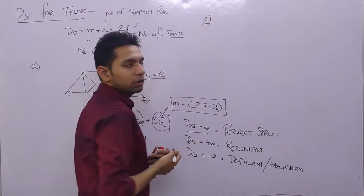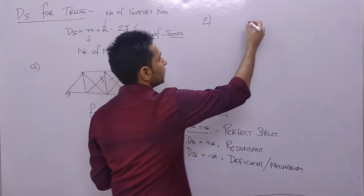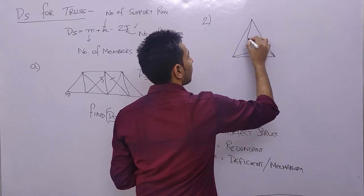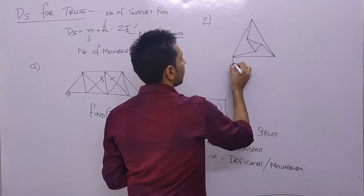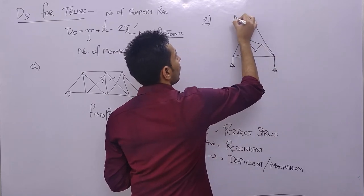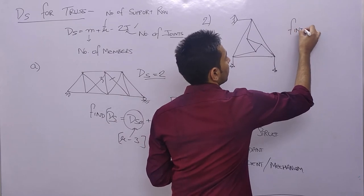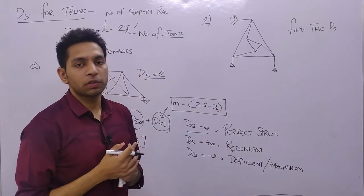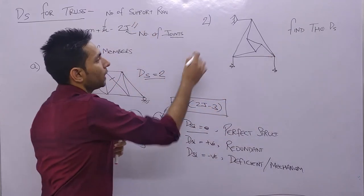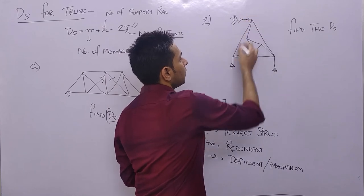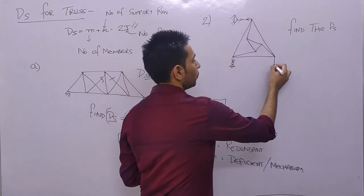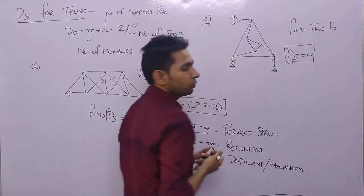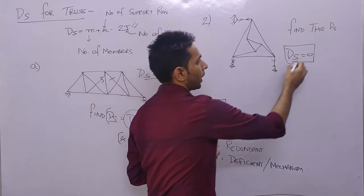Another question from trusses gives you a structure and asks you to find the ds value and comment on its stability. Since truss members carry only axial loads, solving this particular structure yields ds equals zero, meaning it is a statically determinate structure.